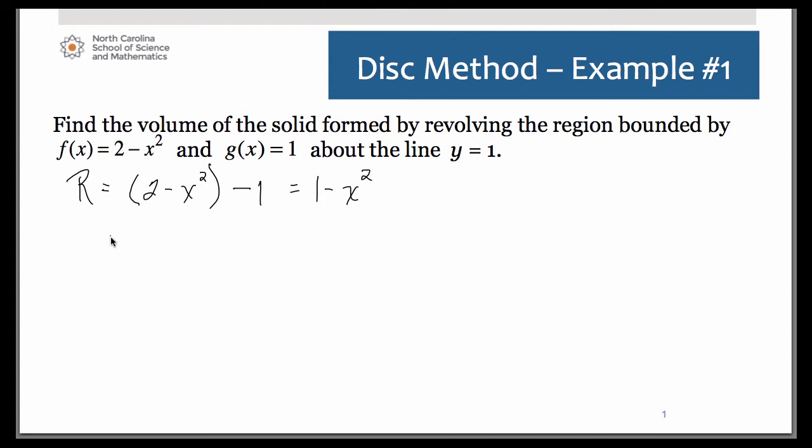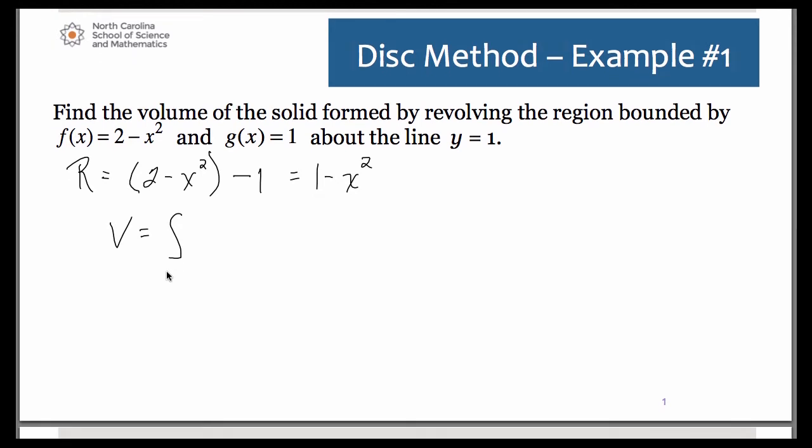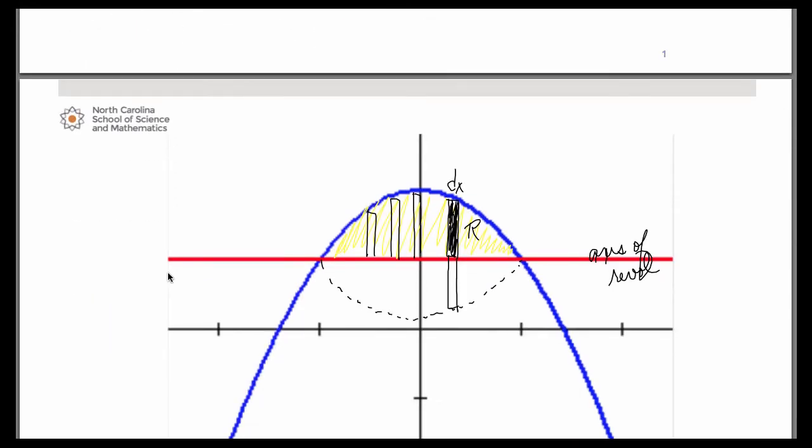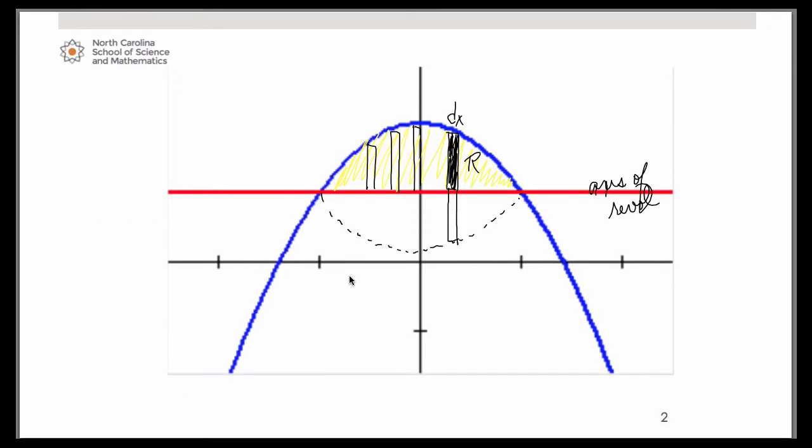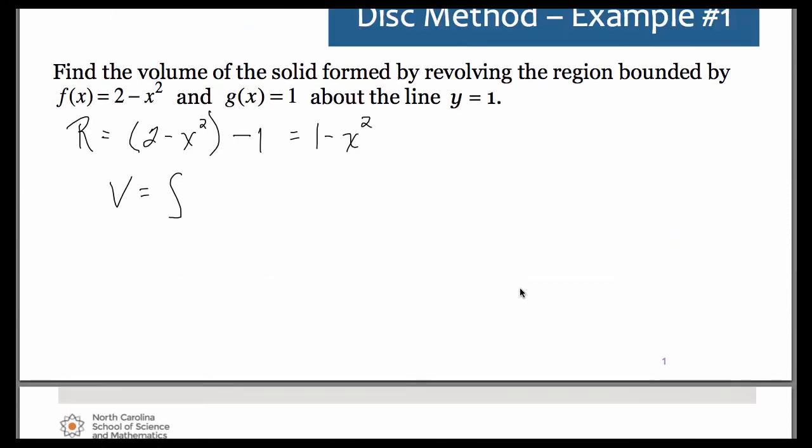To get the volume, our limits of integration need to be X's. If we take a look at our graph, you would have to find these points of intersection. You're welcome to do that on your graphing calculator. You will find that they intersect at negative one and positive one. So those become our limits of integration.